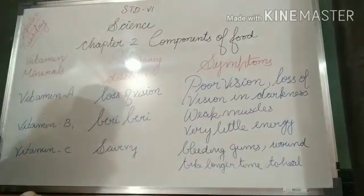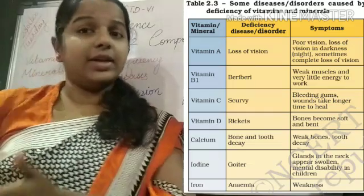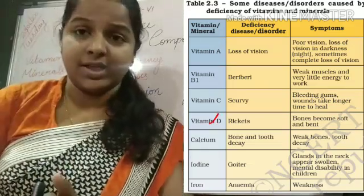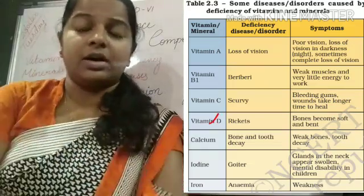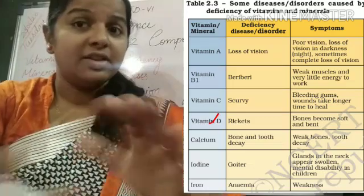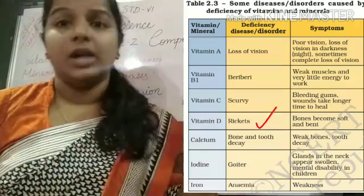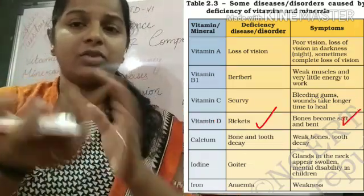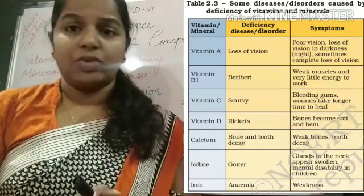Next is Vitamin D. It is present in the early morning sun. Deficiency of Vitamin D causes rickets, and the bones become soft.